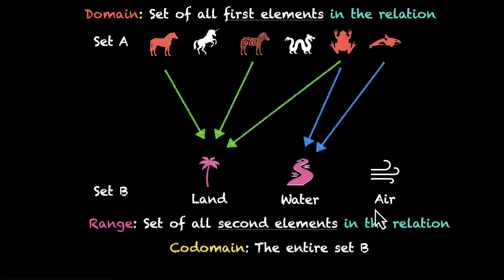Codomain is simply the entire set B. Whatever you have in set B, that's part of codomain. So codomain is land, water, and air. It doesn't matter if you're related or not. If you're part of set B, you're part of codomain.